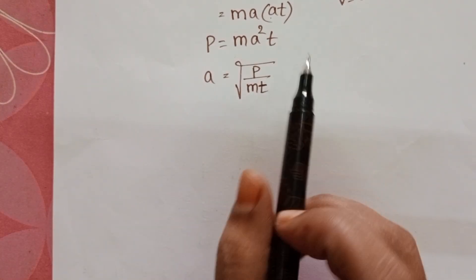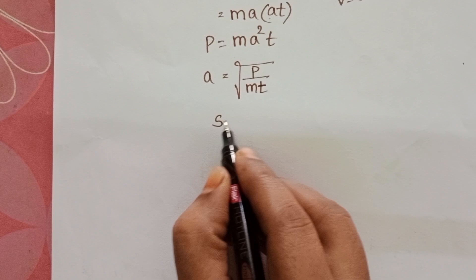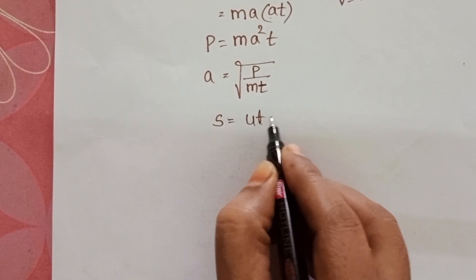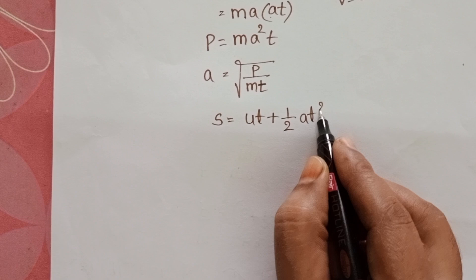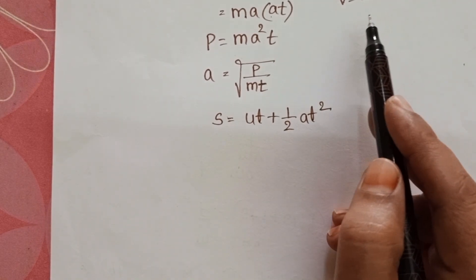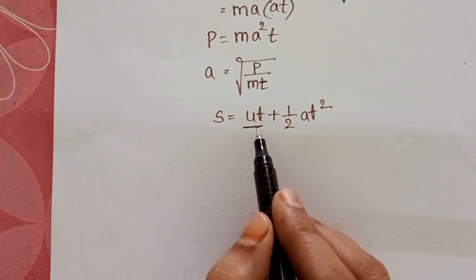To give the relation between displacement and time, take the equations of motion. S equals ut plus half A t square. What is our assumption here? Initially, body starts from the rest position. So this term becomes 0.